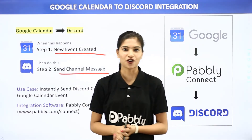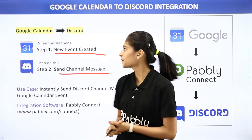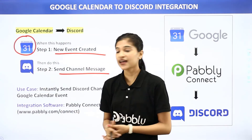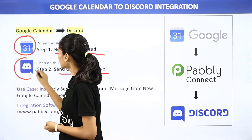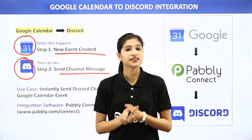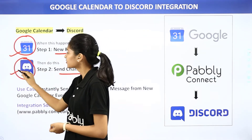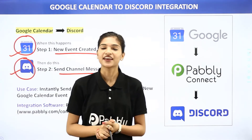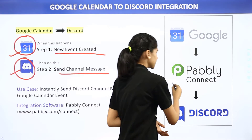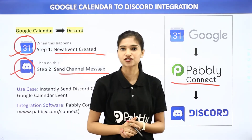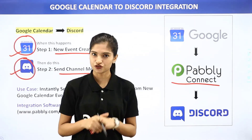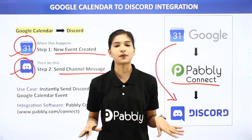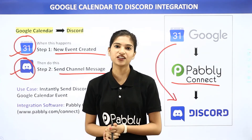Google Calendar is a calendar service by Google, whereas Discord is an online chat and communication platform. The issue is that Google Calendar and Discord don't have any integration between them, and that is why we are going to use Pabbly Connect — an integration software which will help you transfer data from Google Calendar to Discord. The best part is you don't require any knowledge of coding.